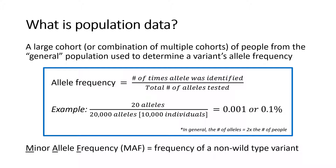Population data is when a large cohort of people, or a combination of multiple smaller cohorts, is used to understand a variant's frequency in the general population. Historically, this type of data was assessed using small cohorts of unaffected controls, but we now have much larger datasets available to evaluate.